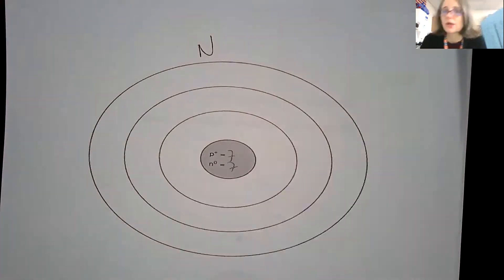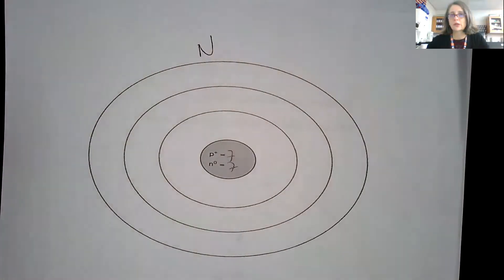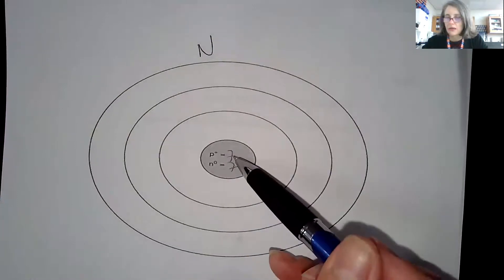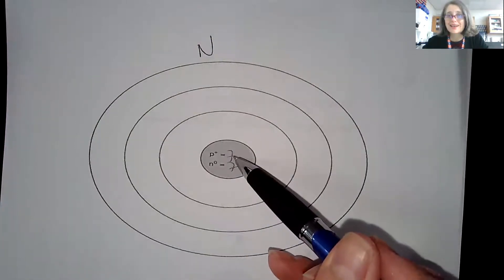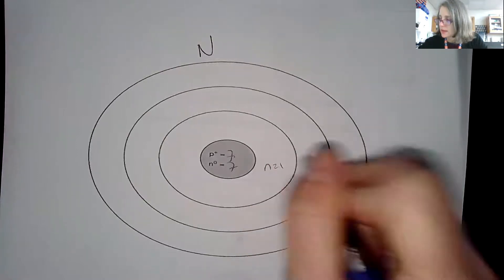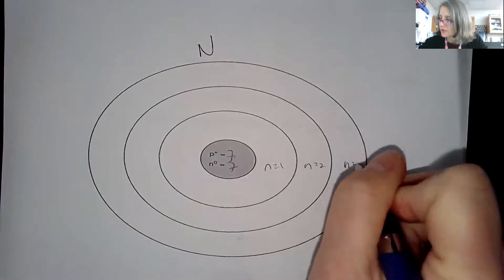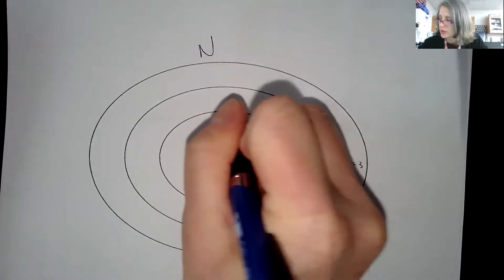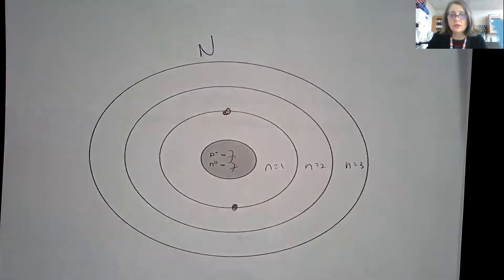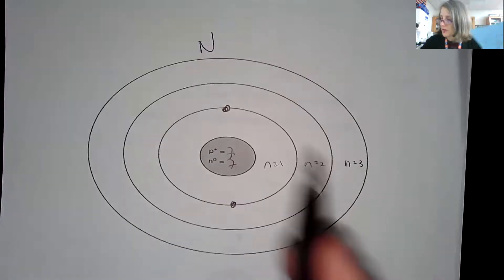Seven means nitrogen has seven protons. Let's say it also has seven neutrons, though that's not relevant to our discussion. Nitrogen is going to have seven electrons as well. So we have energy level one, energy level two, energy level three. I'm going to put two electrons in energy level one.